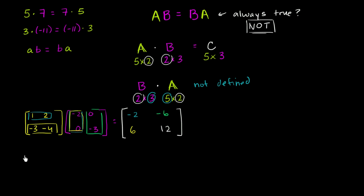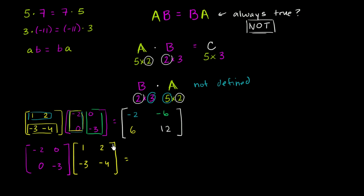Now what if we did it the other way around? What if we were to multiply negative 2, 0, 0, negative 3 times 1, 2, negative 3, negative 4? So negative 2 times 1 is negative 2, plus 0 times negative 3, giving negative 2. Then negative 2 times 2 is negative 4, plus 0 times negative 4 is negative 4. We already see that these two products aren't going to be equal.